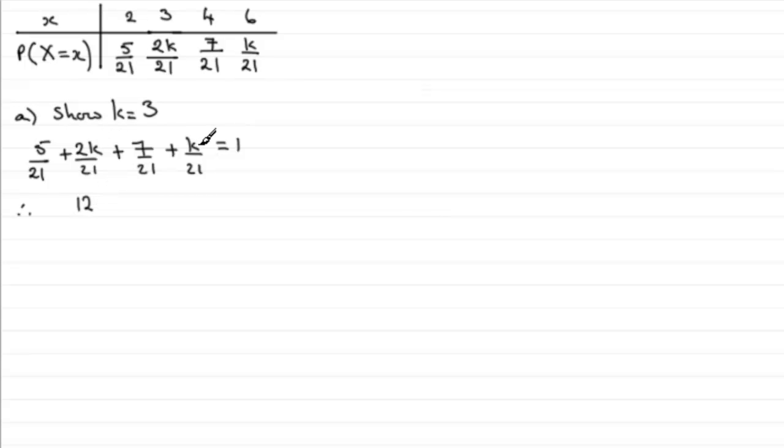And then we'd have 2k plus that k which is 3k would equal 21. And if we subtract 12 from both sides we get 3k equals 9, and dividing both sides by 3 gives us k equals 3.